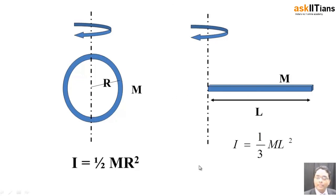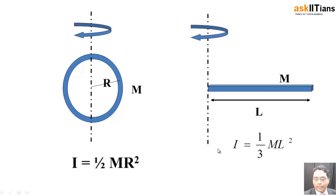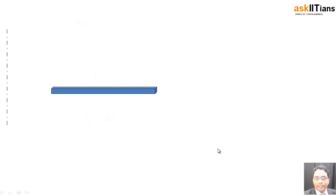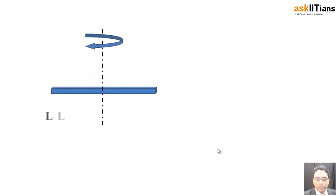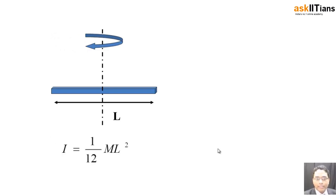If I take the case of a cylindrical rod and try to rotate it about an axis passing through one end, I get (1/3)ML², which gives the moment of inertia about one of the two ends. Similarly, if I want to find the moment of inertia with respect to the center of the same rod, in that case the moment of inertia is going to be given by (1/12)ML².